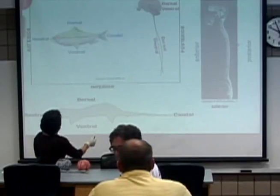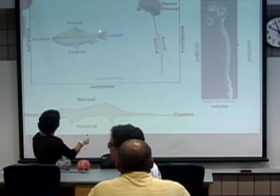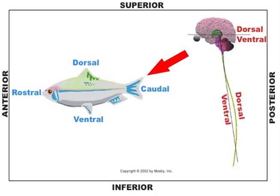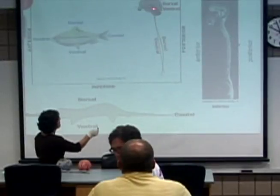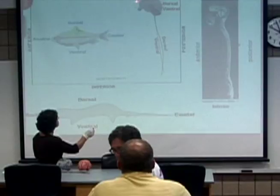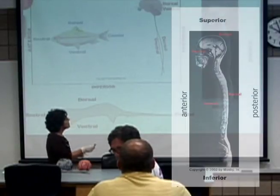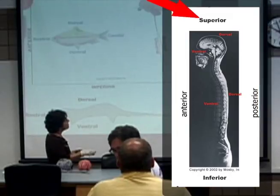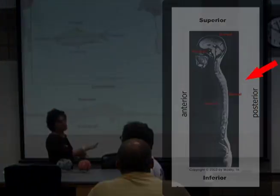We have an extra term: rostral meaning towards the nose, and caudal meaning towards the tail. The nose end is rostral and the tail end is caudal — that takes the bend with it. We also sometimes use superior and inferior, and anterior and posterior.